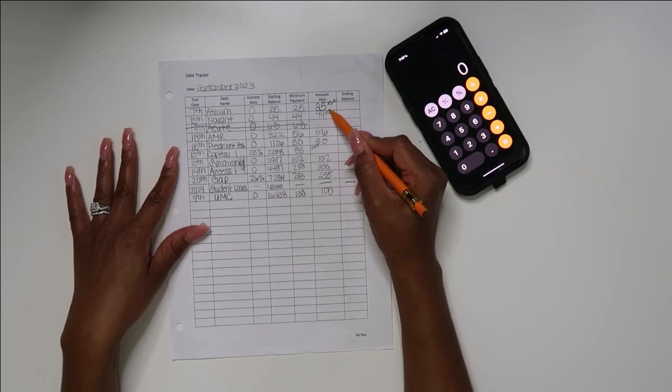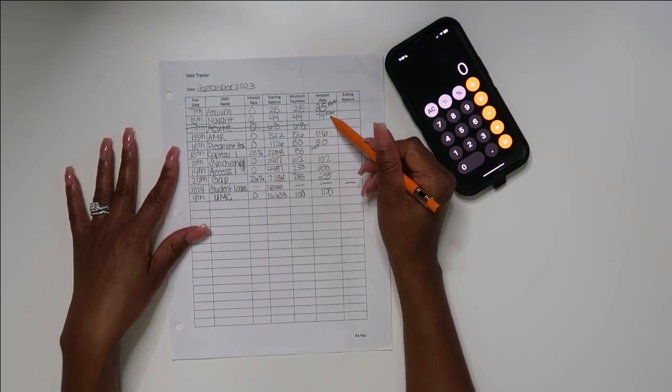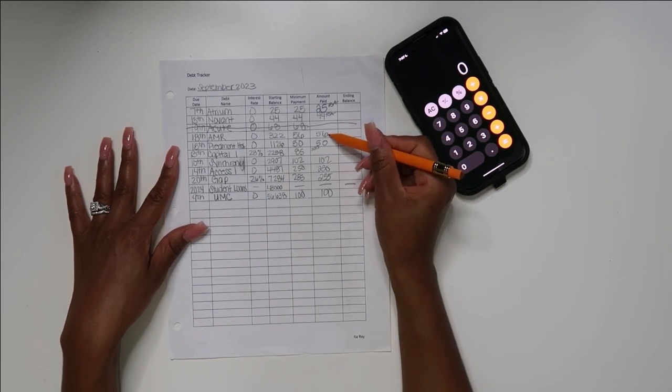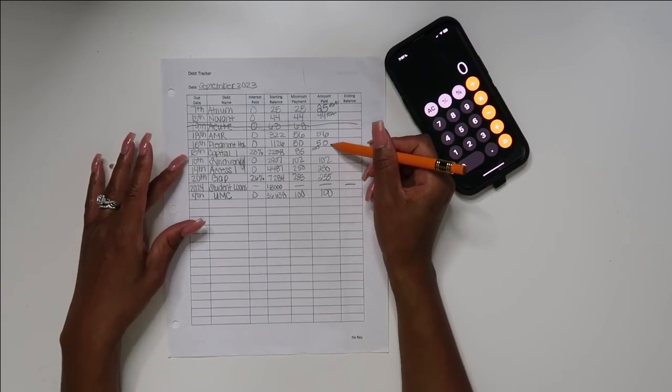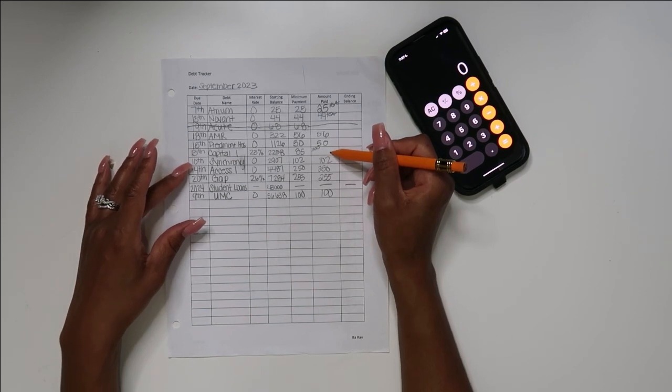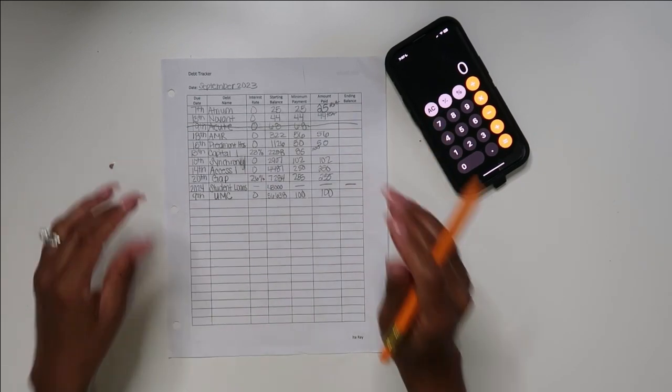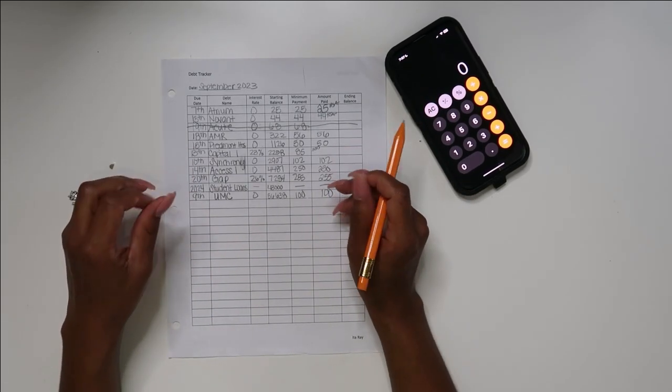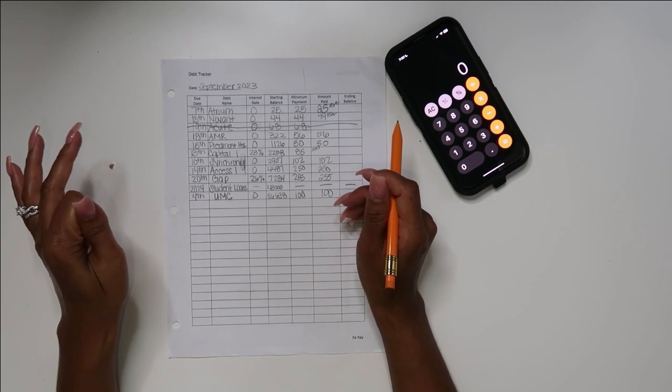This month I paid off Atrium Health, I paid off Novant. I paid $56 to AMR, I paid $50 to Piedmont, paid $300 on my Capital One. Y'all, I need to disconnect it from my phone, like my Apple Pay, because y'all I need Swiper to say 'Swiper no swiping' because baby, anyways.